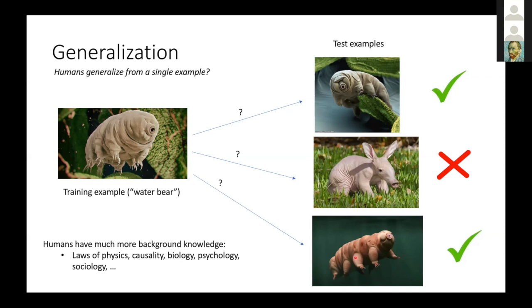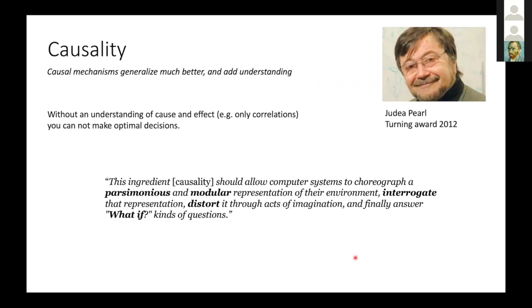The way we do that is we embed a single image into an ocean of background knowledge — the laws of physics. You can even imagine how this little creature would walk or swim. When you look at it, you have ideas about causality, about biology, and maybe less important here, psychology and sociology. Causality plays a very important role in understanding the world and making sure you can generalize away from things you've trained your model on. Without an understanding of cause and effect, it's very hard to make optimal decisions or generalize out of context.